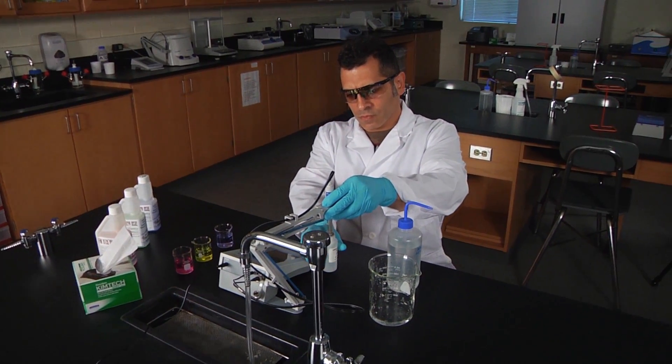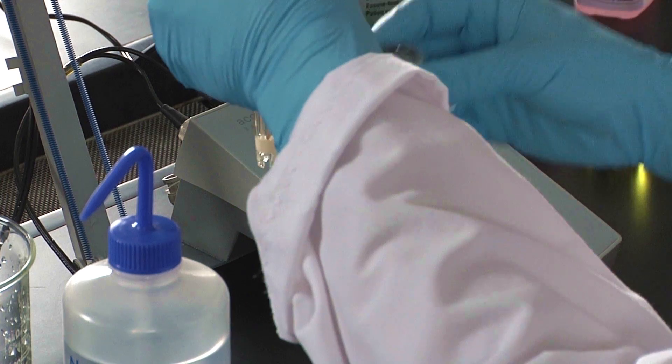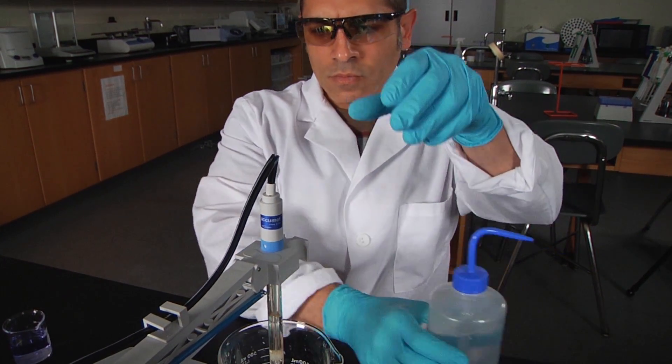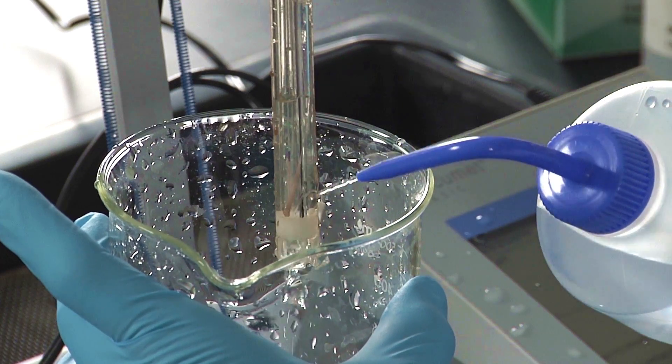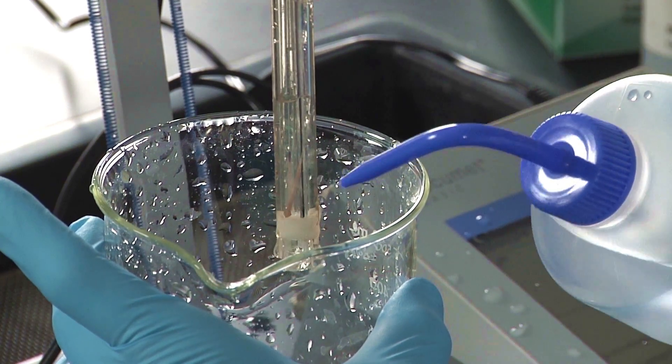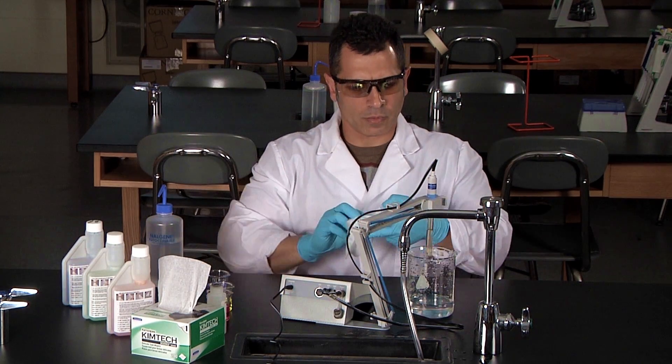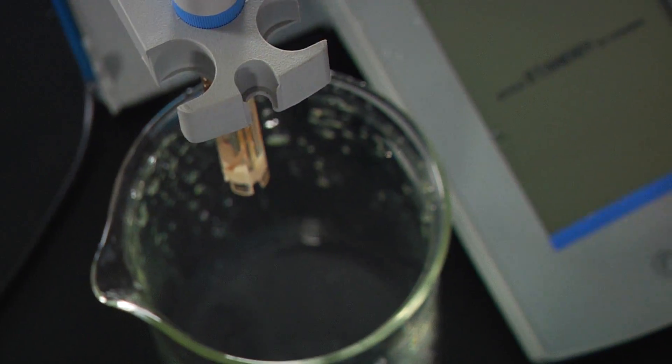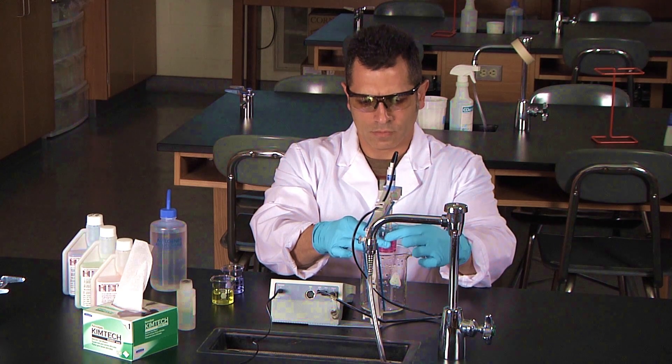Remove the probe from the storage solution and rinse with deionized water. Carefully blot the bottom of the glass bulb with a kim wipe. Next, place the probe into the beaker containing the 4.0 standard buffer solution.